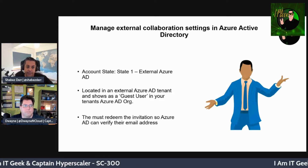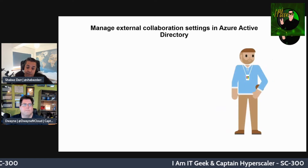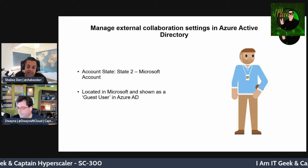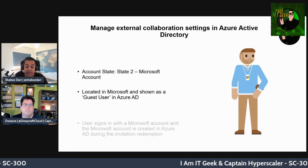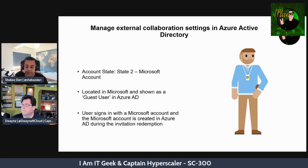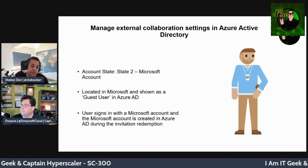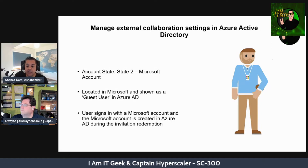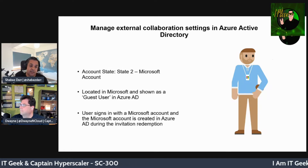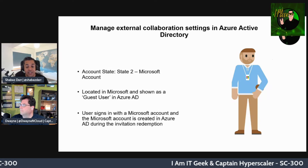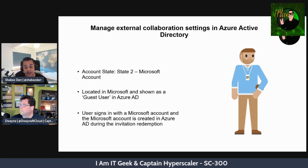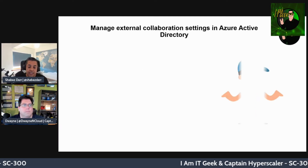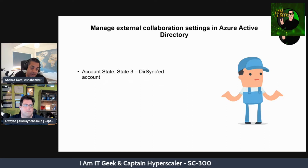Account state two is a Microsoft account. These are located in the Microsoft tenancy and shown as a guest user in Azure AD. The guest user signs in with their Microsoft account — this can be an outlook.com, live.com, hotmail.com, etc. Google is also supported as another identity. The invited user's identity is created as a Microsoft account in the inviting organization's directory during offer redemption.